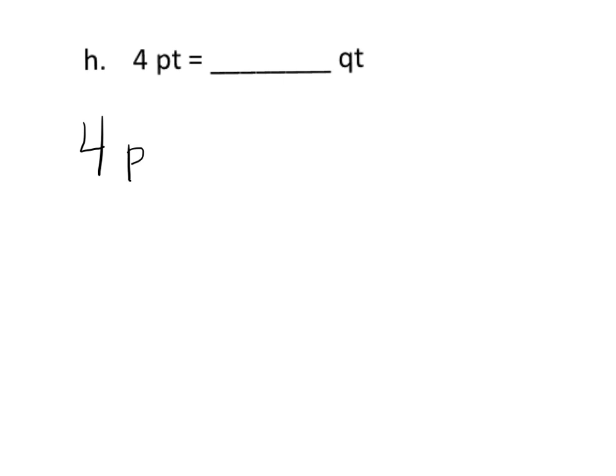So we're going to start with four pints, and we're going to think of that as four times one pint. And every time, I've got to tell you, every time I see this PT, I always think 'points,' like I'm scoring points, but it's actually pint. All right, so four times one pint, and then it's going to be four times - but now we want to do it in terms of quarts. Well, it turns out it takes two pints to equal a quart. So one pint is a half of a quart.